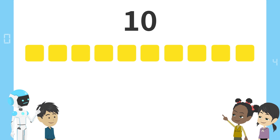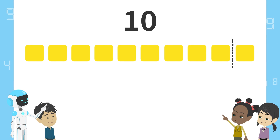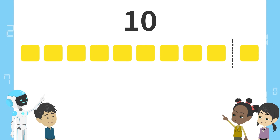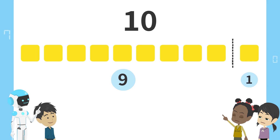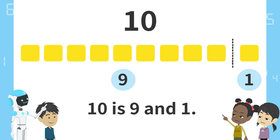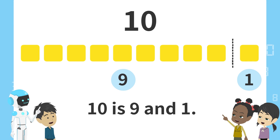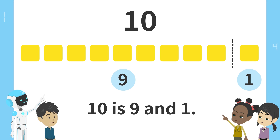Finally, here. Nine blocks on the left and one block on the right. Ten is nine and one. You're perfect.